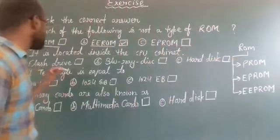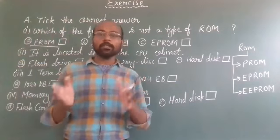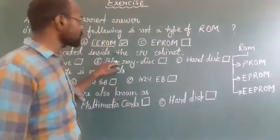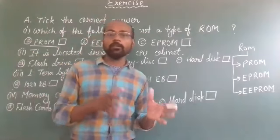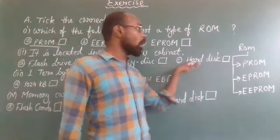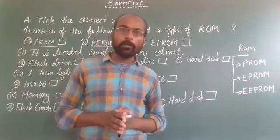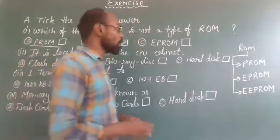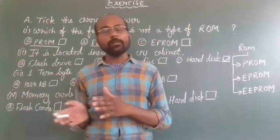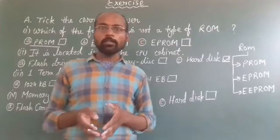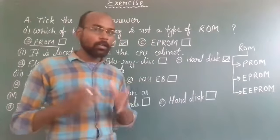Option number A is flash drive. Students, flash drive is a storage device which is not fixed inside a CPU cabinet. Option number B is Blu-ray disk, which is also not fixed inside a CPU cabinet. Option number C is hard disk, which is fixed inside a CPU cabinet. So option number C is the right answer. Hard disk comes in different storage capacities like 320 GB, 500 GB, 1 TB, 5 TB, and so on.